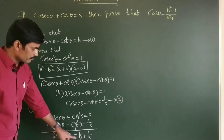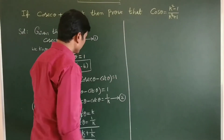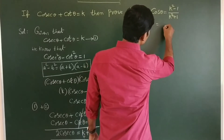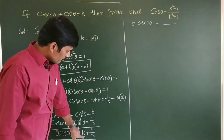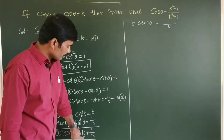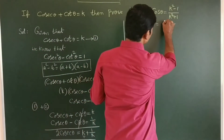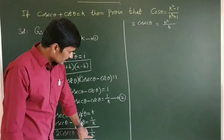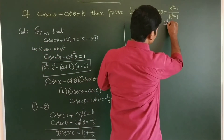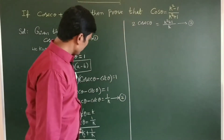To find the LCM, the denominator is k. So 2 cosecant theta equals k squared plus 1 by k, since k times k gives k squared, and 1 times 1 gives 1. This gives 2 cosecant theta equal to k squared plus 1 by k. Take this as equation 3.